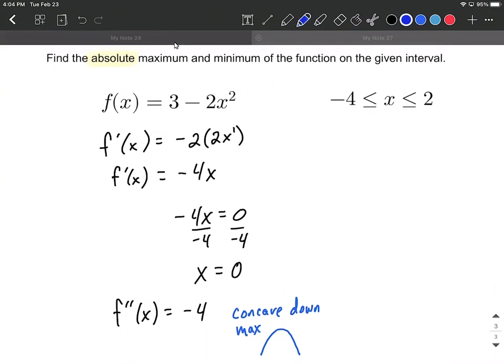Because this is limited to this particular interval, what we want to do is plug in the x value that we found, x equals 0, and -4 and positive 2 from our interval. So we're going to plug each one of these into our original function and compare them. Basically say which one's the biggest, which one's the smallest or most negative.